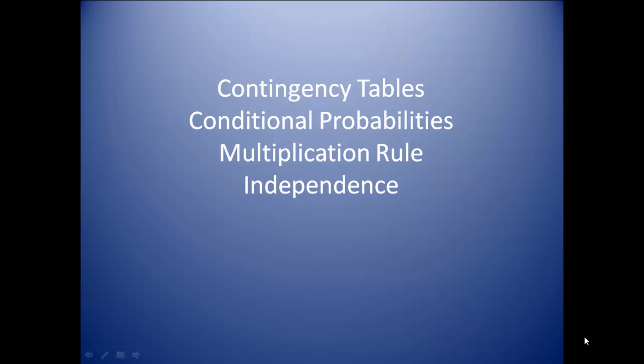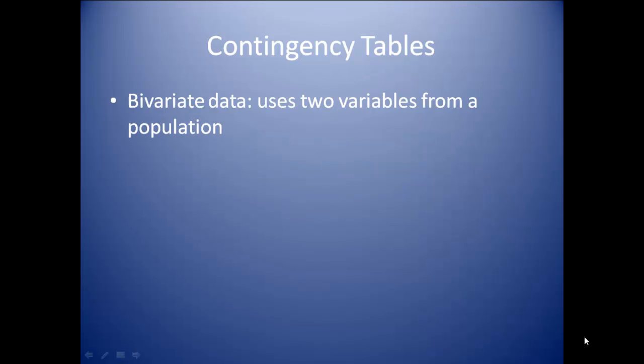Take a look at contingency tables, conditional probability, the multiplication rule, and what independence means in statistics. First thing, for contingency tables, what we need to have is bivariate data. And this is data that uses two variables from a population.